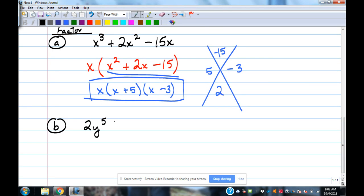2y to the 5th minus 18y to the 3rd. Is it in descending order? Check. Is there a GCF? 2 and 18 have 1 in common? 2, and then this one has 5 y's. This one has 3 of them, so they could share how many? 3. So the GCF is going to be 2y to the 3rd.